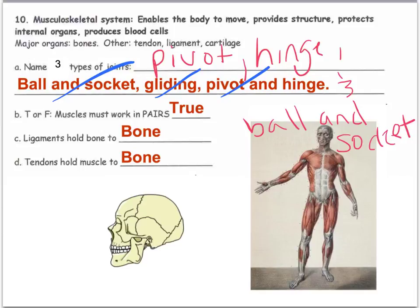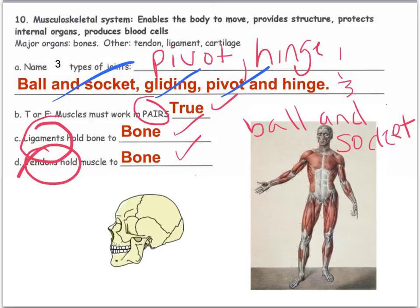Muscles must work in pairs — that's true. Ligaments hold bone to bone; tendons hold muscle to bone. In the notes, Mr. Chiraldi gave you an acronym to remember these. Read through the notes at the beginning of the packet if you need more elaboration on definitions, or ask me questions in class. That was just a quick overview of the biology review — it will also be covered at extra help, so come on through. Have a good one!